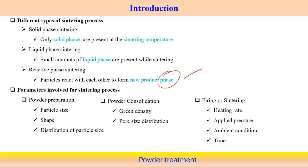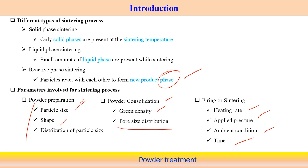Parameters involved in the sintering process: first is powder preparation — the size, shape, and size distribution of the powder. Next is powder consolidation — making the consolidated powder in the form of a green density, then performing sintering to reduce pore size. The final stage is firing, which depends on the heating rate, applied pressure, ambient conditions, and time — based on that, particular properties can be achieved after sintering.